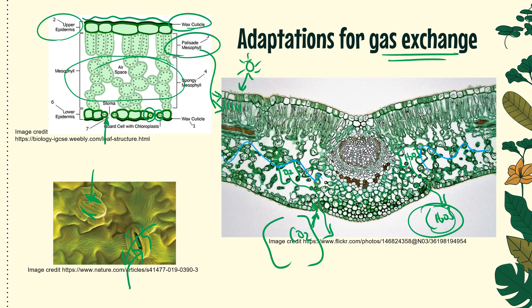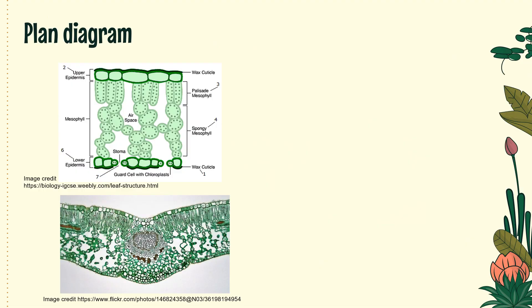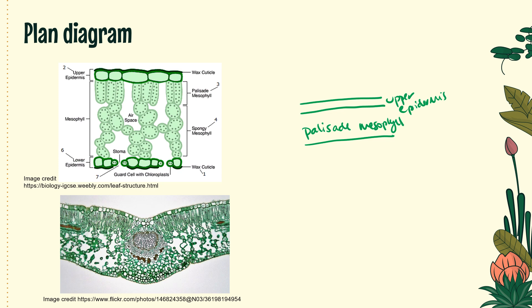We may be asked to draw a plan diagram of a generalized leaf. Plan diagrams are super simple — they show the distribution of tissues, with no need to draw individual cells. Starting the plan diagram: first a layer of upper epidermis as a protective layer on top; just under that, the palisade mesophyll where the great majority of photosynthesis occurs; under that, the spongy mesophyll where gas exchange occurs; and then the lower epidermis as the other protective skin layer underneath.